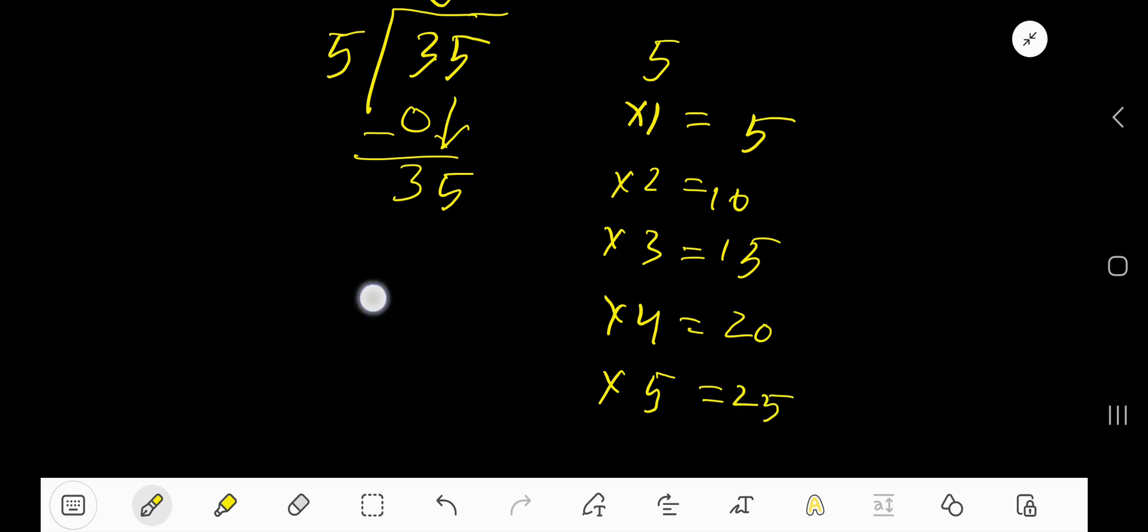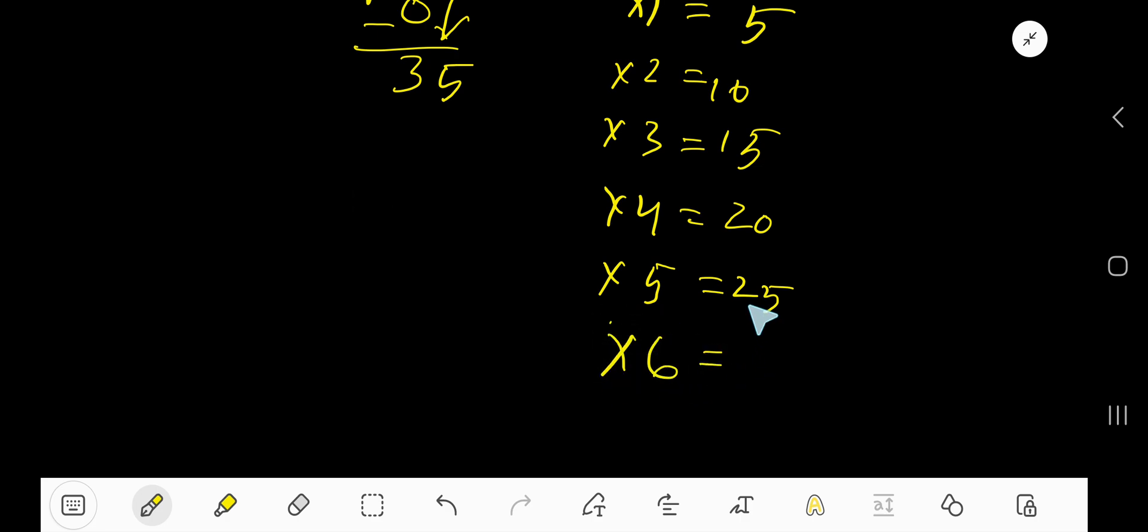Continue, we have 35. 5 times 6, we have just add 5, 30. 5 times 7, just add 5, 35.